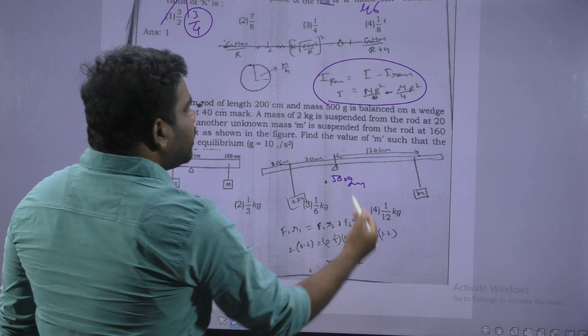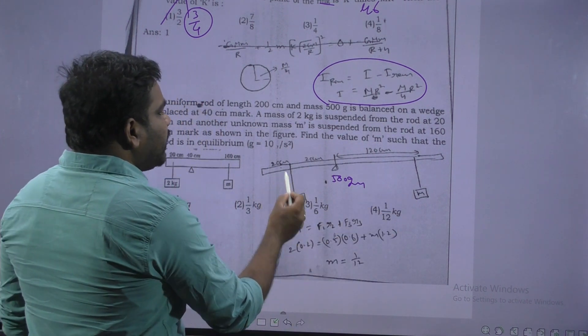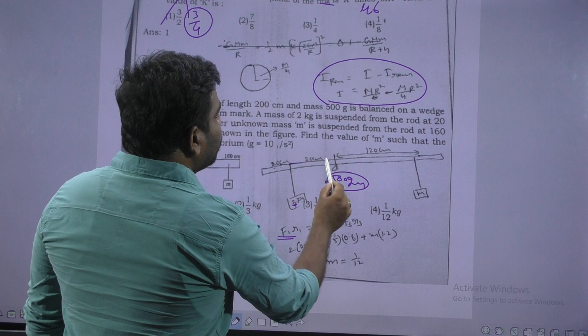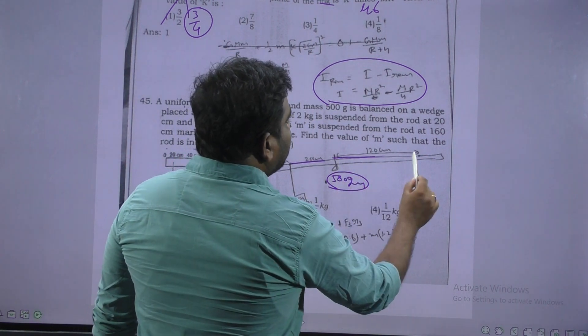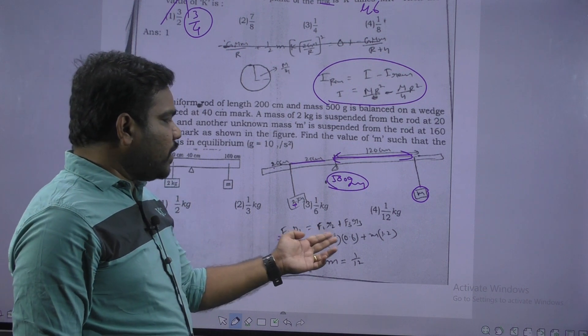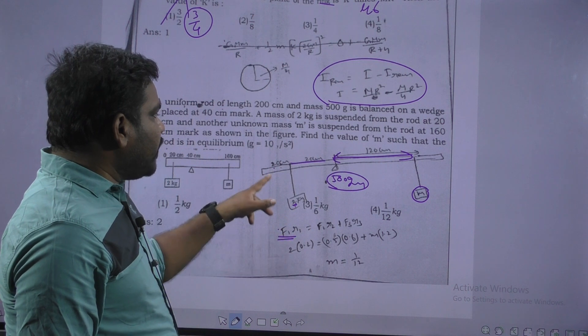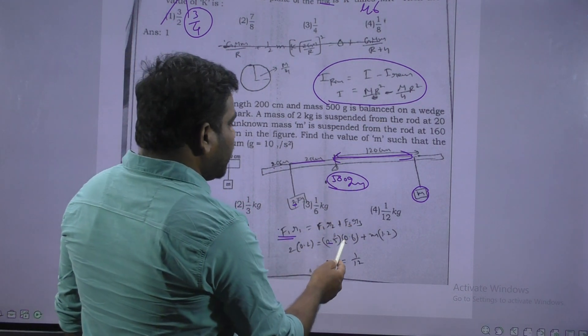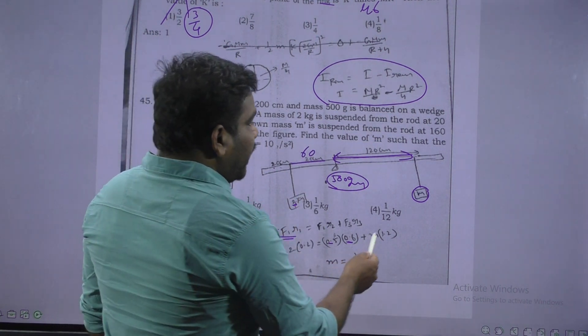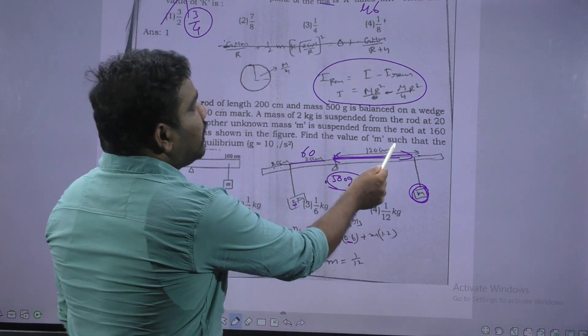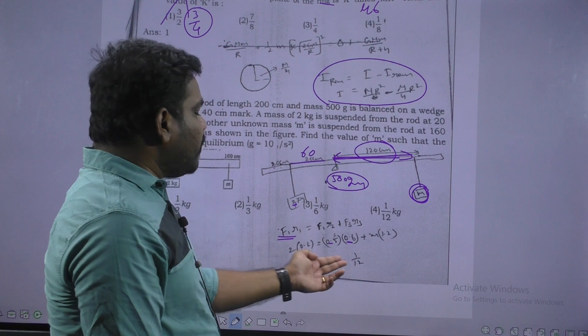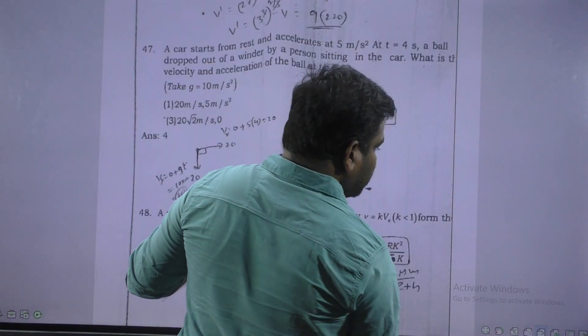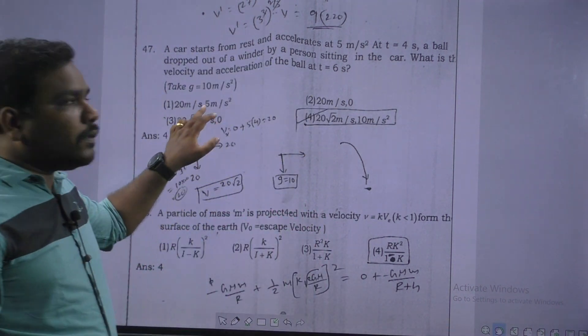Next. This is clockwise torque and anticlockwise torque. Observe here. There is 500 grams is connected here. Based on this one we are asking M value. Observe here 20 cm this weight force F1 into R1 that is equal to F2 R2 plus F3 R3. F1 is 2 kg and R1 is 20 cm that means 0.2 m, that is equal to F2 is 500 grams that means 0.5 kg and distance is 60 cm, 0.6 m. And next this is M3 into this distance is 120 cm to convert it into meters 1.2. After calculation M value 1 by 12.